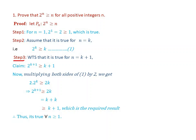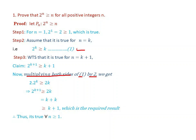Step 3: We want to show that it is true for n equal to k plus 1. We multiply both sides of equation 1, our assumption, by 2. So 2 times 2 to the power of k is greater than or equal to 2 times k.